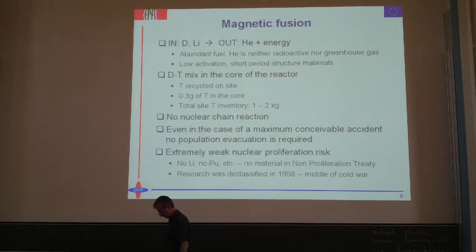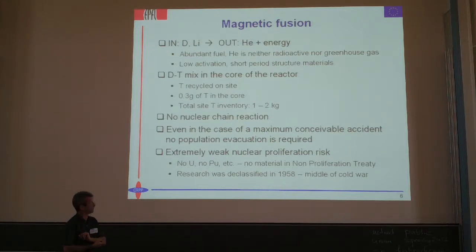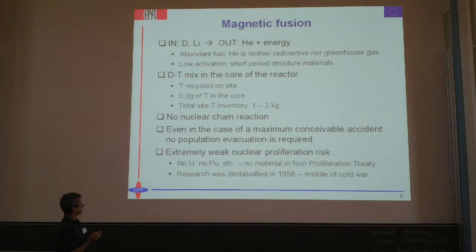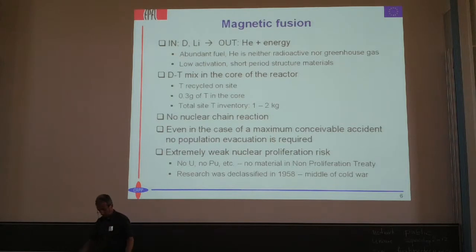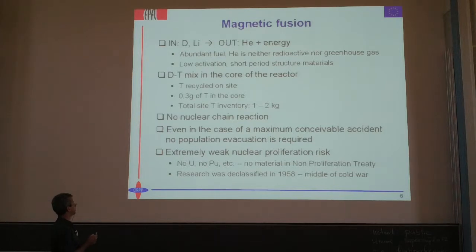Fusion — magnetic fusion. What do we do in magnetic fusion? We take deuterium and lithium in, and what comes out is helium and energy. There is fuel literally everywhere. The outcome, helium, is neither radioactive nor a greenhouse gas. There are of course neutrons in this reaction, but they activate radioactively the vacuum vessel and the elements around the reactor, though these are made of low activation material with short periods. The deuterium-tritium reaction uses tritium in the core of the reactor, with tritium which is recycled on the side.